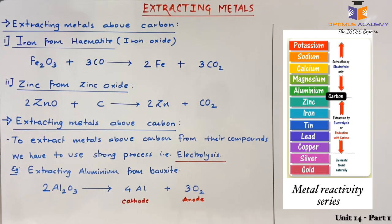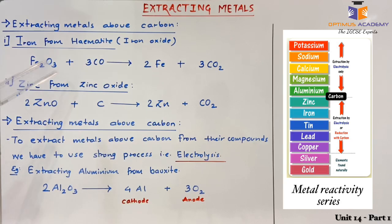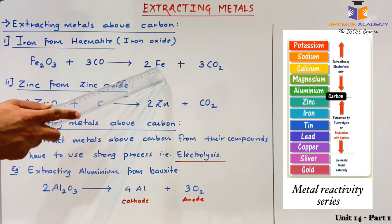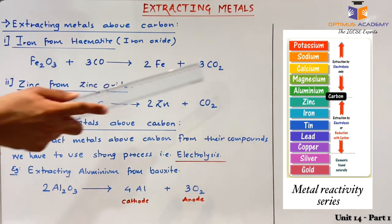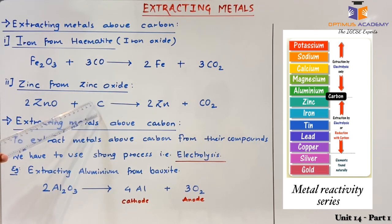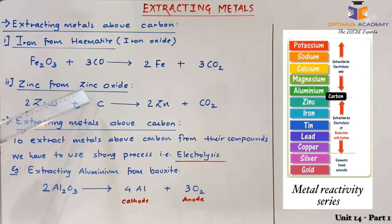The ore of iron is hematite, that is iron oxide Fe₂O₃. We can react it with carbon monoxide, as carbon monoxide is a reducing agent — it will take oxygen from the iron oxide. Once carbon monoxide reacts with iron oxide, we get pure iron and carbon dioxide. Similarly, for zinc, zinc oxide is below carbon in the metal reactivity series, and hence carbon or carbon monoxide can displace zinc from its oxide. Once zinc oxide reacts with carbon, we get pure zinc and carbon dioxide.